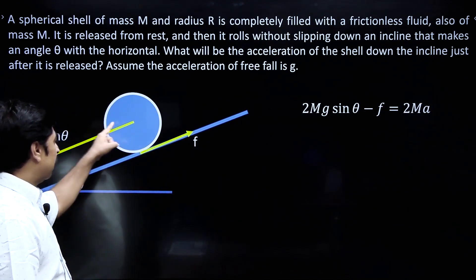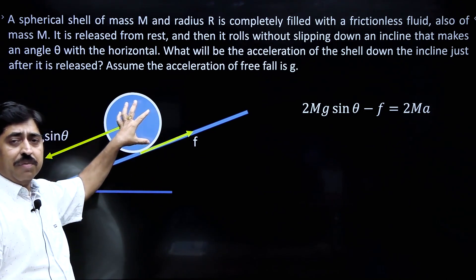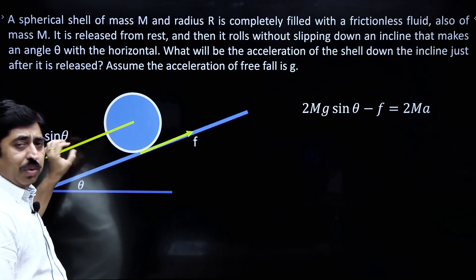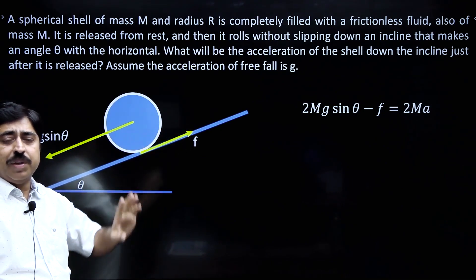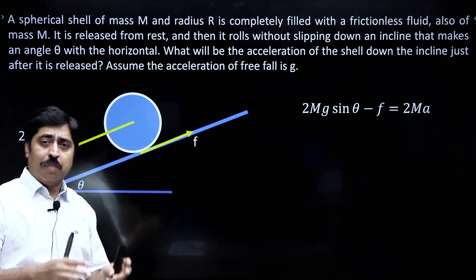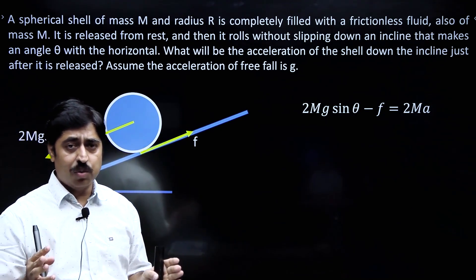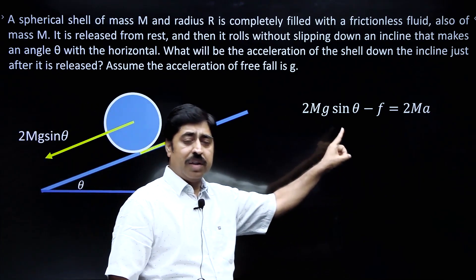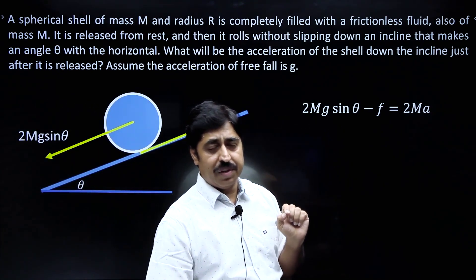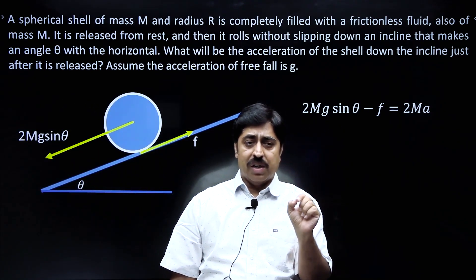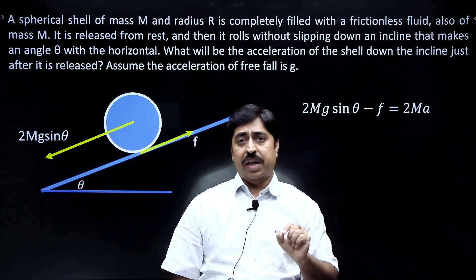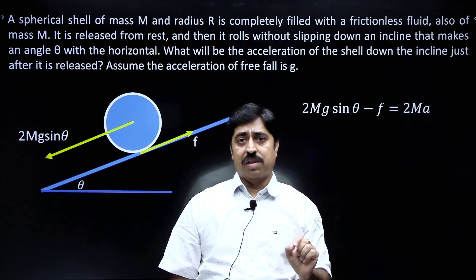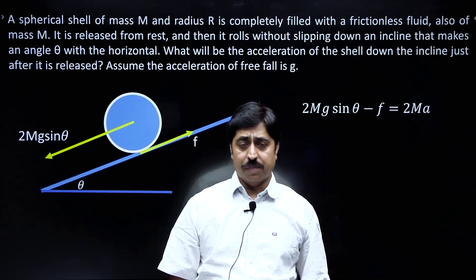2mg sinθ minus F is the resultant force in the downward direction along the incline, and that must equal the mass of the assembly, 2m, times acceleration. In this equation, F stands for net external force and a stands for acceleration of the center of mass of the system.